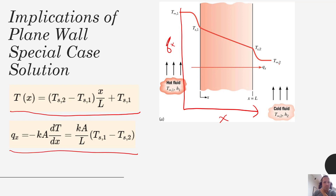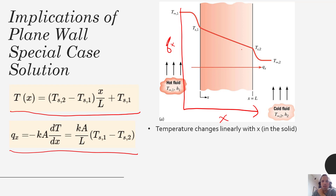The way we get there: first of all, we know that Q is constant in the solid because we solved the heat equation and we knew that the second derivative was zero, so the first derivative is constant, meaning that the temperature itself is a straight line. So temperature changes linearly with x in the solid, and the flux and the flow of heat are both also constant with respect to x.